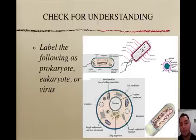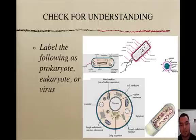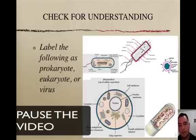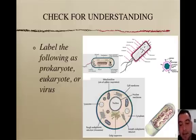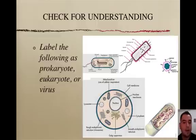Let's do a check for understanding — label the following as prokaryotes, eukaryotes, or viruses. If you look carefully and don't see a nucleus but it is a cell, then it's either prokaryote or eukaryote. No nucleus means it's a prokaryote.